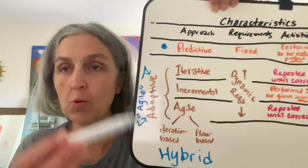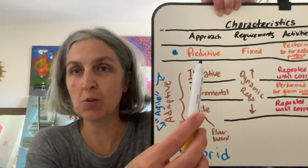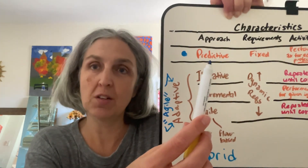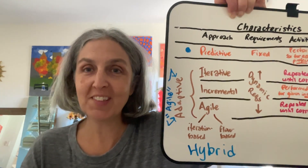Especially if you're taking the authorized course, you'll see that on a lot of slides. They'll also interchange the word 'predictive' with 'traditional' or 'waterfall.' I hope this sheds some light. If you are a member of PMI, you can download the Agile Practice Guide for free — it's on page 18. If you have any questions, feel free to reach out.